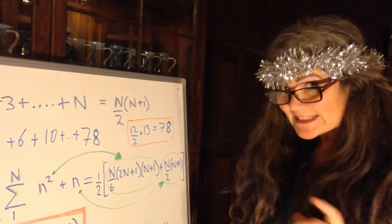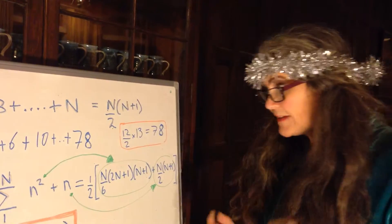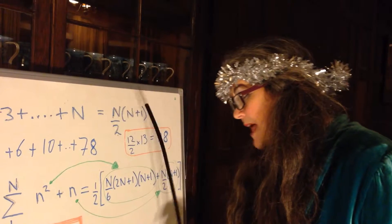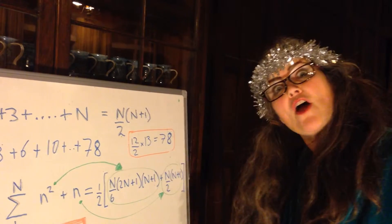The formula for adding up all the numbers from one to n is here. So, n times n plus one over two.